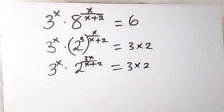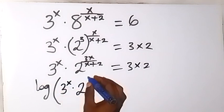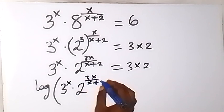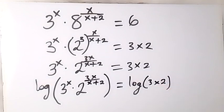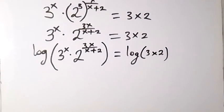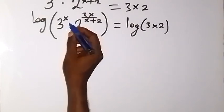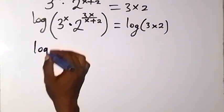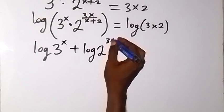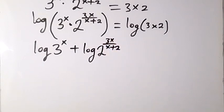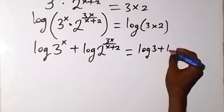We want to take the log on both sides. When we take the log on this side, that is log of 3 raised to power x times 2 raised to power 3x all over x plus 2, and also the log on this side: log 3 times 2. From here we can apply the law of logarithms — the product rule — and separate this as the sum of two logs: log 3 raised to power x plus log 2 raised to power 3x over x plus 2. That equals log 3 plus log 2.